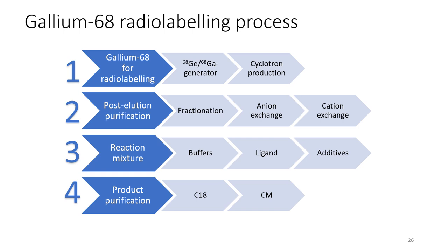Gallium-68 can be obtained either from cyclotron production or from the generator. You need to post-purify your eluate because metal contamination is a significant problem — gallium is a metal and any metal contamination in your mixture will influence radio labeling. The reaction mixture must be prepared under certain conditions, and final purification before patient administration may also be involved. Gallium labeling is not as straightforward as technetium labeling; it's not simply a matter of adding gallium to a kit and performing QC. You must also account for radiation protection, as PET isotopes have higher radiation constraints.